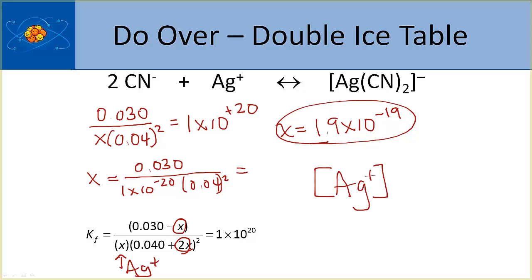Because this silver ion is not bound in the complex ion, we refer to this as the free ion concentration. The total ion concentration is the concentration we started with initially — that includes silver in the complex plus free silver ion. I hope that helps with the calculation of free ion concentration problems.